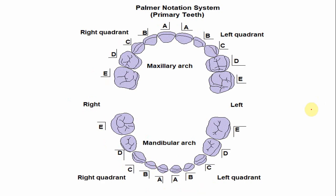In the Palmer notation system, the alphabet begins from the midline to the second molar in each quadrant. The only difference is the symbol used to indicate the quadrant. The symbol indicates the mandibular right quadrant, and the alphabet is A for that quadrant. For the left quadrant, a different symbol is used, and again the number is A.